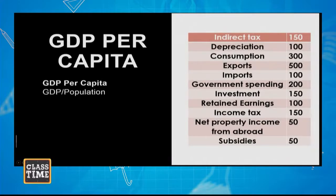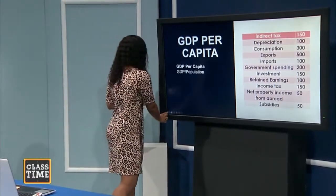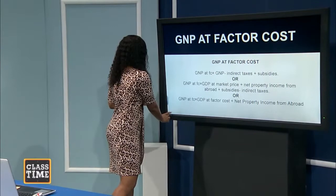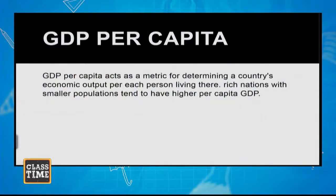If you are asked to calculate GDP per capita, you simply divide the GDP by the population. GDP per capita looks at a measurement of what the average output would be in the economy per person — assuming each person is making a contribution, it shows how the overall GDP reflects per person in the economy.